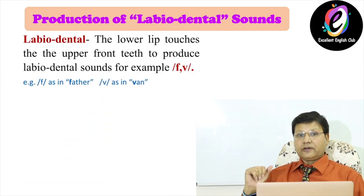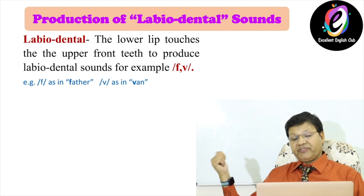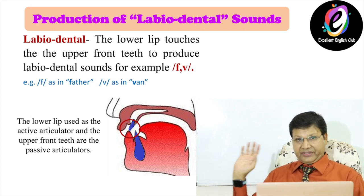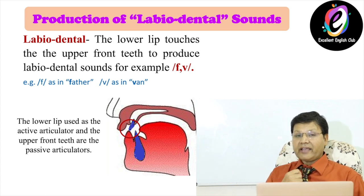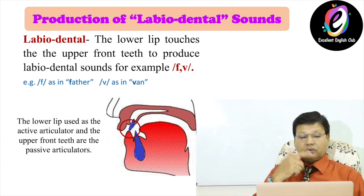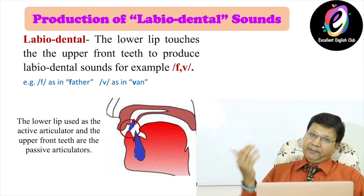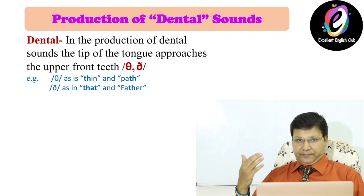Next: production of labiodental sound. In the production of labiodental sound, the lower lip touches the upper front teeth to produce sound — for example /f/ as in 'father' and /v/ as in 'van'. In the picture you will see the lower lip touches the upper teeth. We say labiodental because we produce the sound with the help of lips and teeth. The lower lip is the active articulator and the upper teeth is the passive articulator.